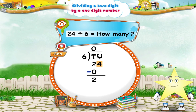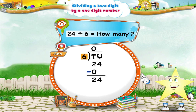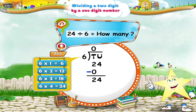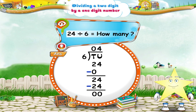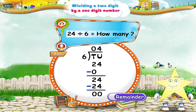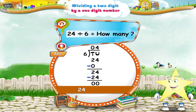Bring down 4 units and write it at the side of 2. These are 24 units. Say the 6 times table up to 24. 6 4's are 24. The quotient is 4. Write this above the line in the units place. Subtract the product 24 from 24 units. The remainder is 0. So, 24 divided by 6 equals 4.